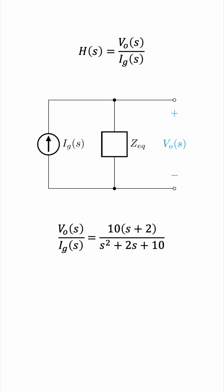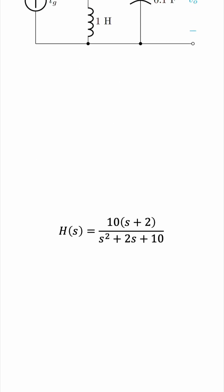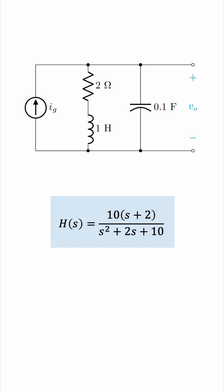This is the output over input, which is H of S, 10 times S plus 2 over S squared plus 2S plus 10, and this is therefore the transfer function of the circuit we started with.